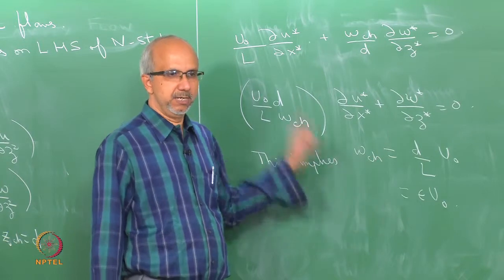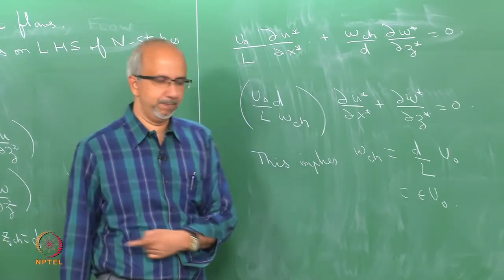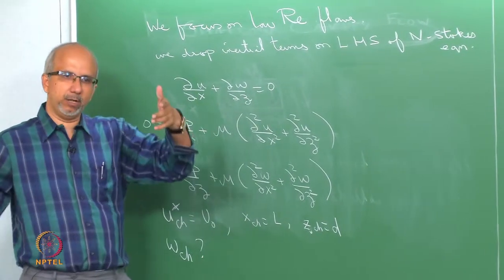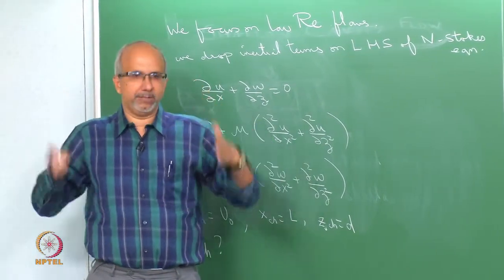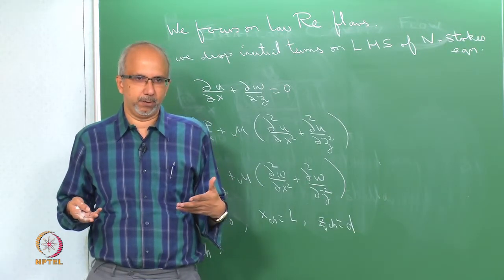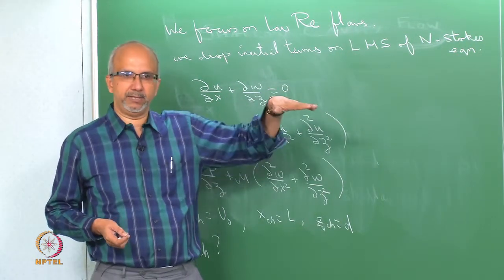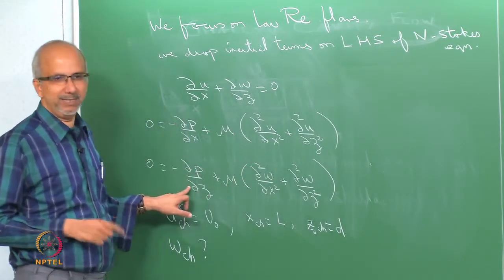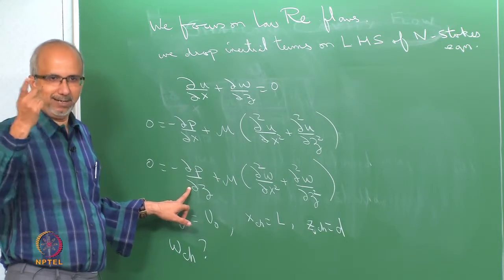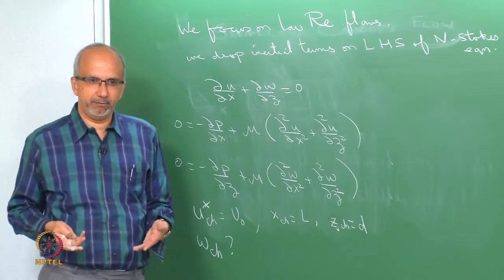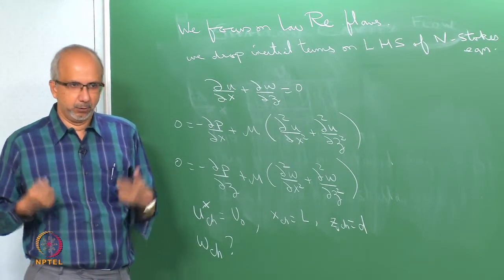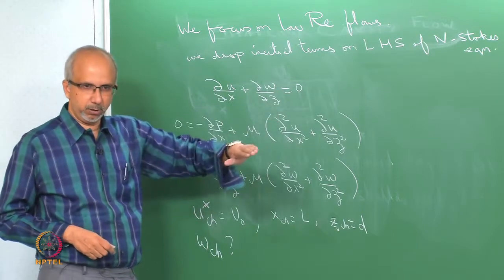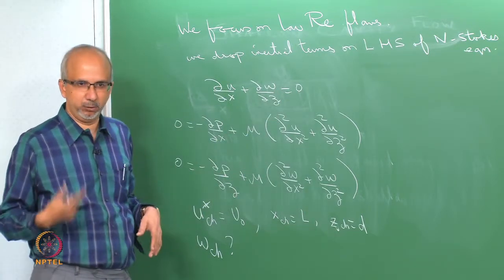Using these characteristic scales in the momentum equations, I will make them dimensionless. Note that in a regular pipe flow, the pressure drop is something you impose experimentally, whereas in this particular problem, the pressure gradient is going to be decided by the flow. So dp/dx and dp/dz are unknowns I need to find out. Earlier in Hagen-Poiseuille flow, you imposed dp/dx and found a parabolic velocity profile. Here, the flow is driven by the wall, so dp/dx is something I need to determine.